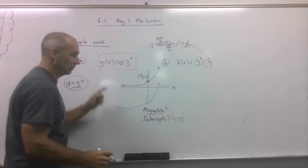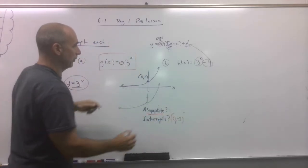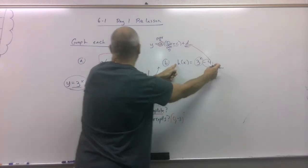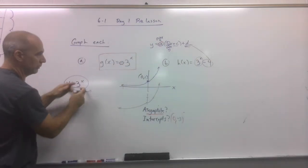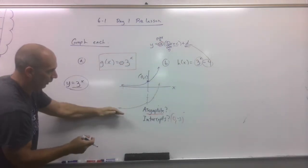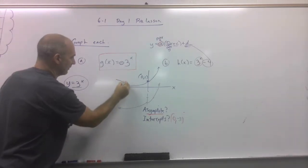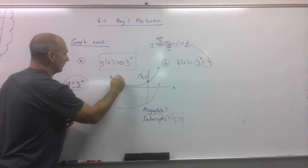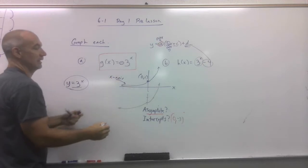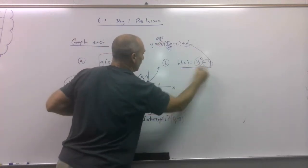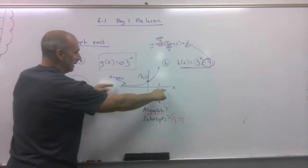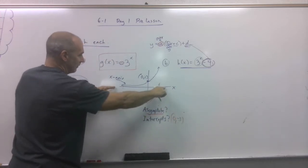Now this one is very tricky. So remember, this is simply the purple one moved down 4. So if the purple one, now listen carefully, has an asymptote and it's the x-axis, and we move the whole thing down 4, it's kind of like we're moving the x-axis down 4.